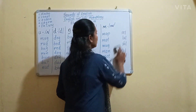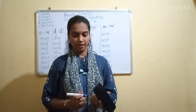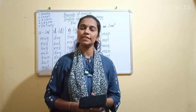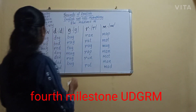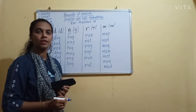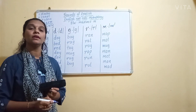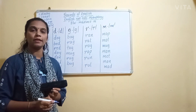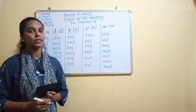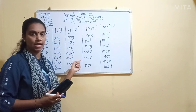This was about the sounds we learnt in our previous video. Today we are going to learn about the sounds of another cluster of letters, the next milestone of RW. That is the fourth milestone U-D-G-R-M. U-D-G-R-M is the fourth milestone in English Nalikali RW.